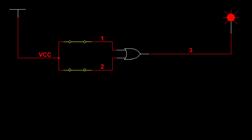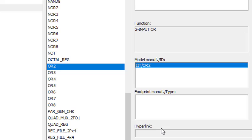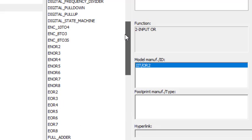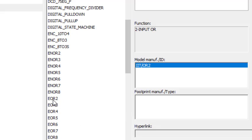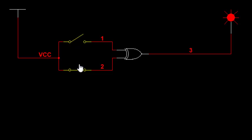Similarly we can check the working of other gates. Let us check the working of the XOR gate using Replace Component. XOR is listed as 'ER' gate here. I place it and run: 0 0 is 0; 0 1 is 1; 1 0 is 1; and 1 1 is 0.